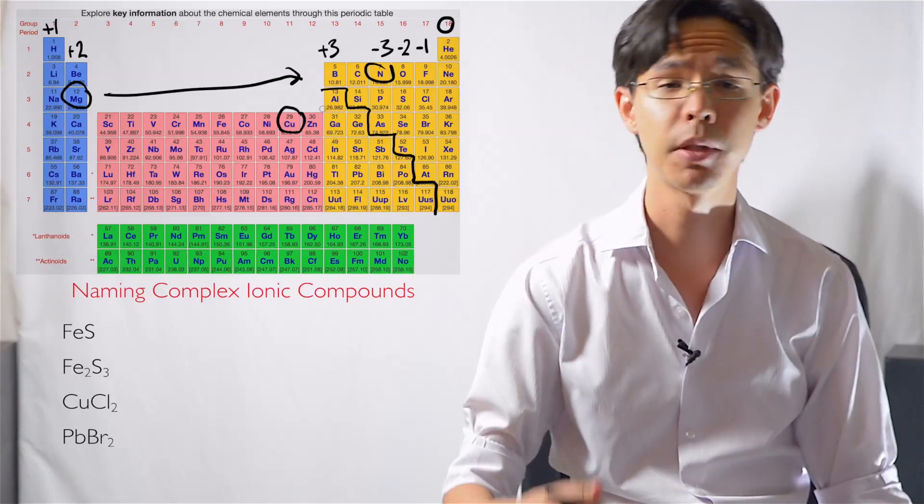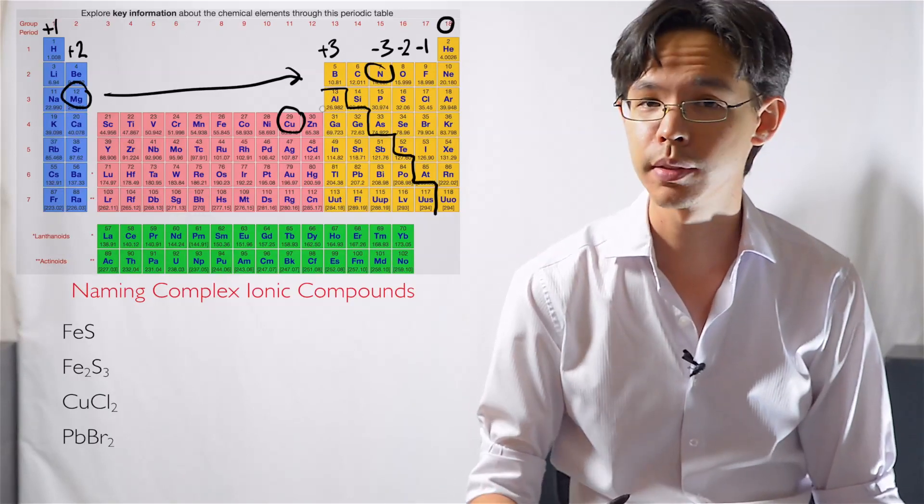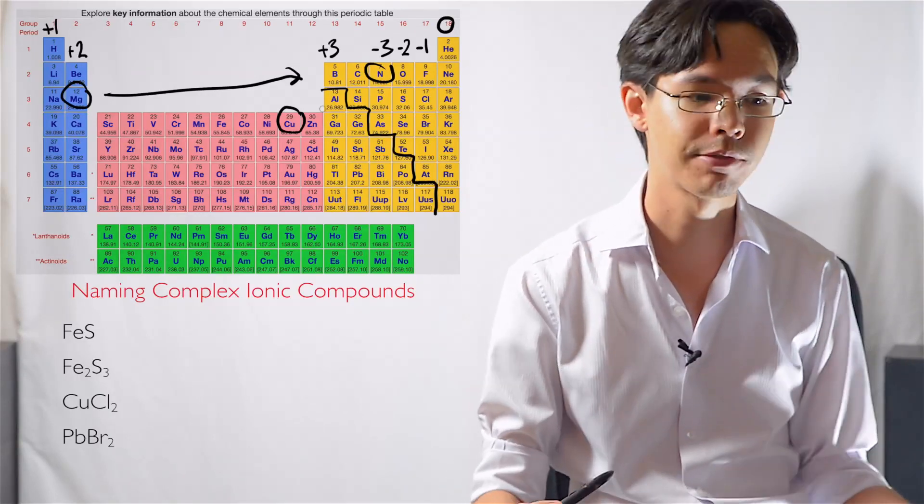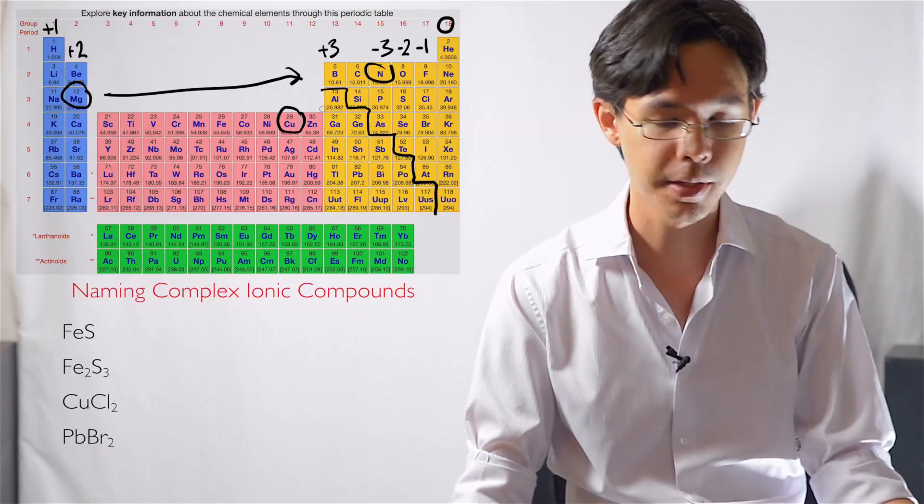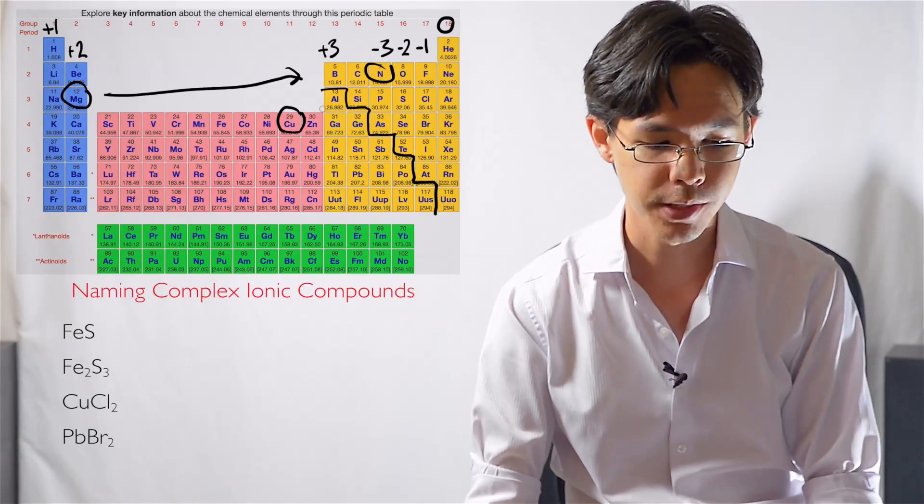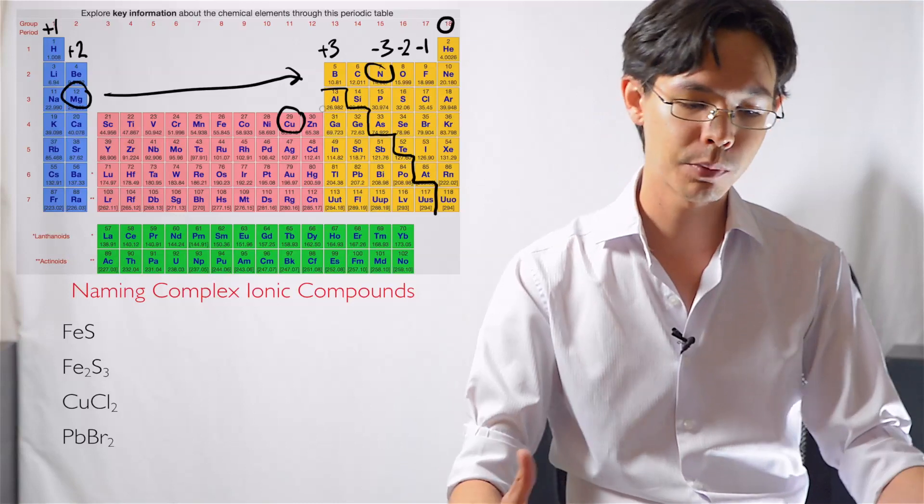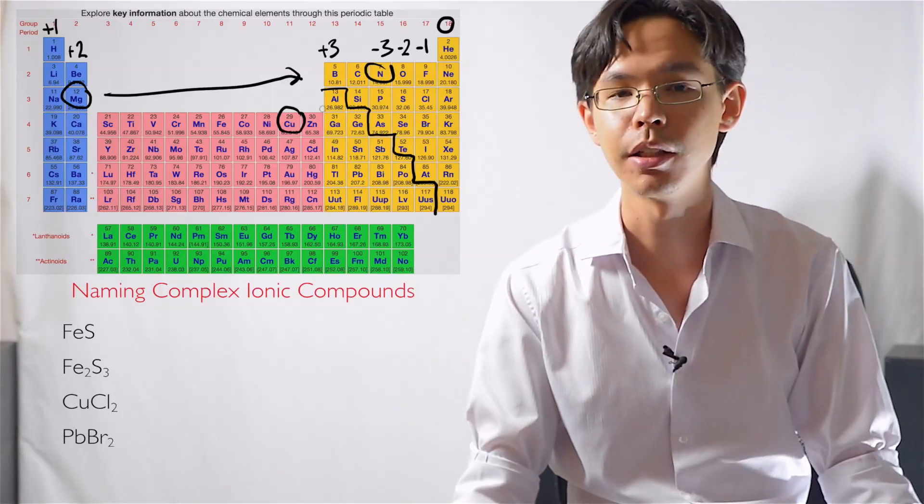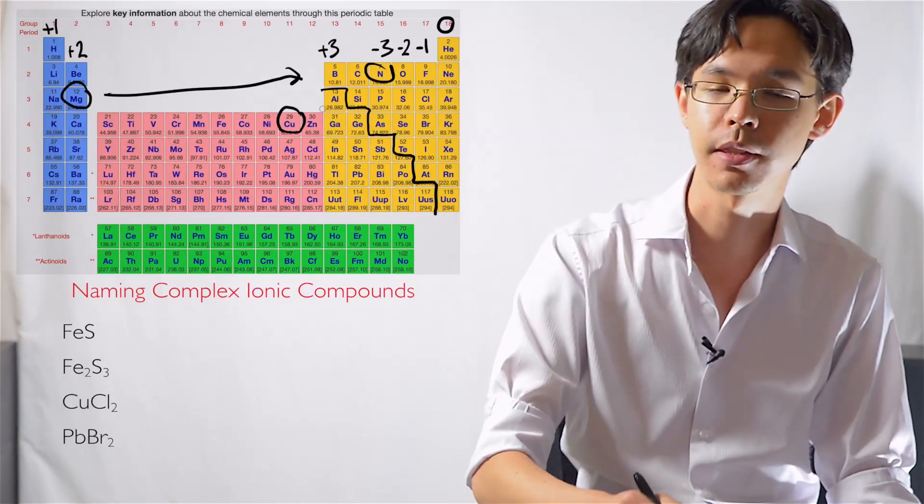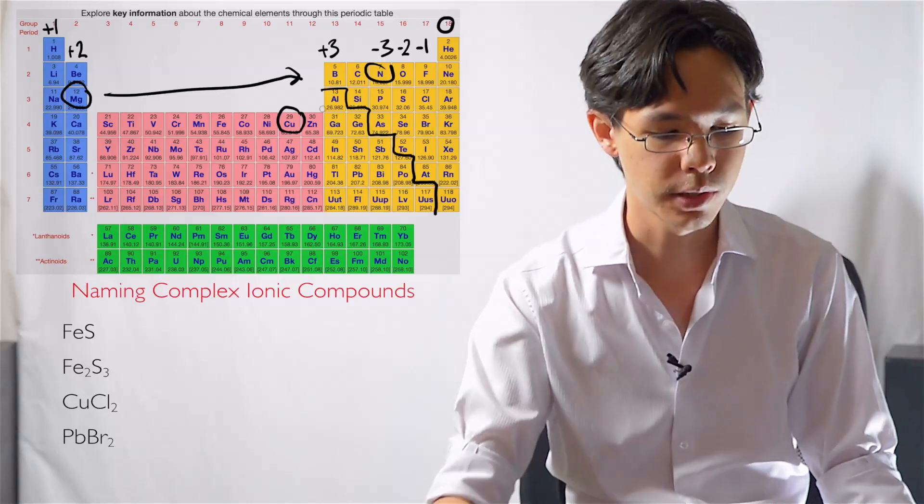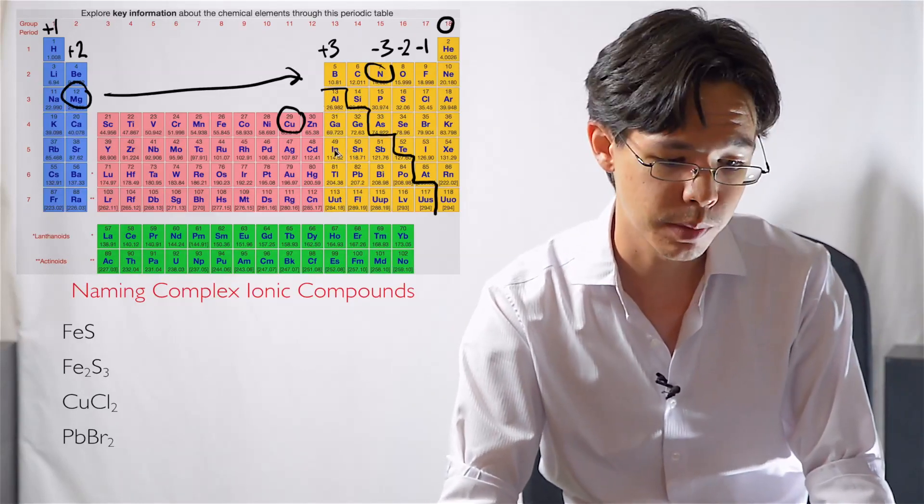copper here, as an example, can be positive one or positive two. It can have a variety of charges, and some have even more varieties. So it gets a bit confusing. And the way that we try and account for this variability of these charges is to notate them with Roman numerals. So let's get started. It'll make more sense when we do some examples.